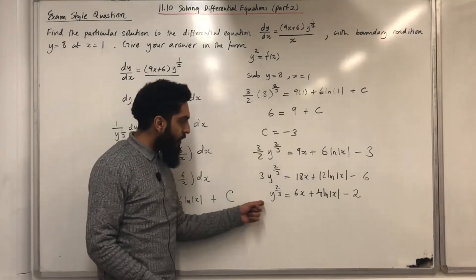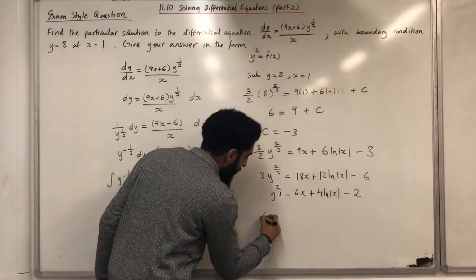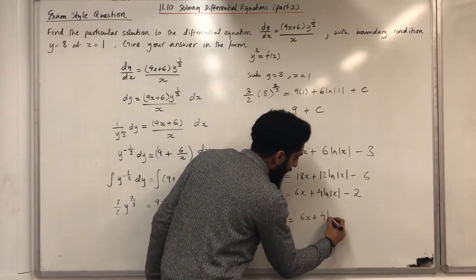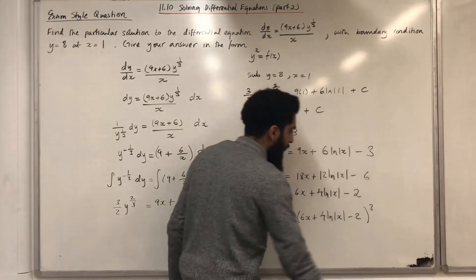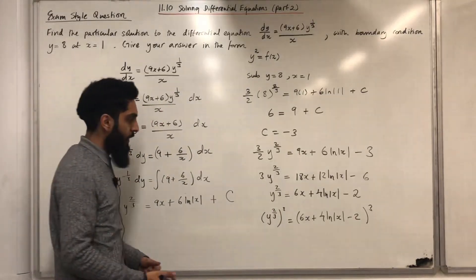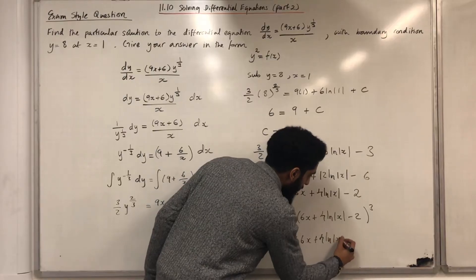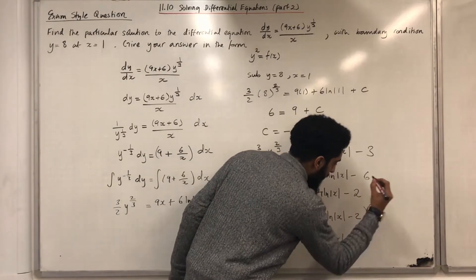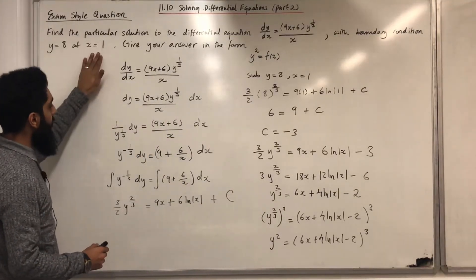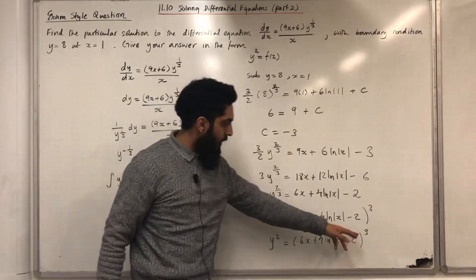Now to go from y^{2/3} to y², I apply the power of 3 to both sides. So (y^{2/3})³ = (6x + 4 ln|x| − 2)³. By the laws of indices, multiplying the powers gives 2/3 × 3 = 2, so y² = (6x + 4 ln|x| − 2)³. Therefore the particular solution in the form y² = f(x) is y² = (6x + 4 ln|x| − 2)³.